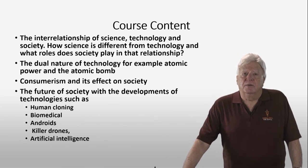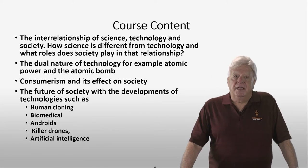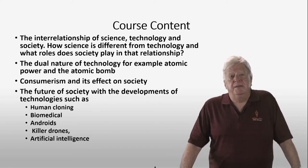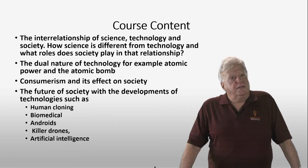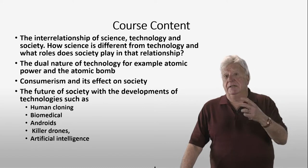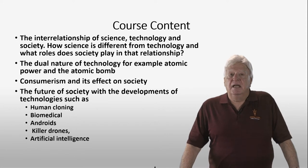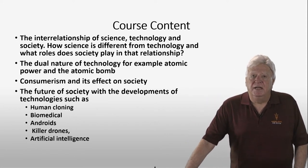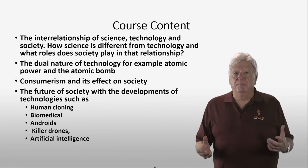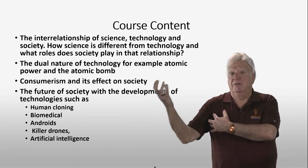As to the content of the course, we study the interrelationship of science, technology, and society — how science is different than technology, and what role society plays in that relationship. We discuss the dual nature of technology, for example, atomic power and the atomic bomb. We discuss consumerism and its effect on society, and we also discuss the future of society with the development of such technologies as human cloning and biomedical engineering, where you can control a prosthetic arm using your brain.